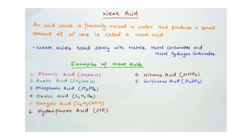Further examples of weak acids are: acetic acid (CH3COOH), phosphoric acid (H3PO4), oxalic acid, benzoic acid, and hydrofluoric acid.